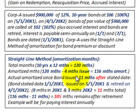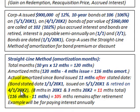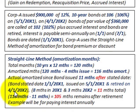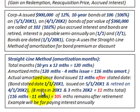The actual months amortized since the bond was issued are 11 months. The bond stated date is 1-1-20X1, issued on 5-1-20X1, and retired on 4-1-20X2. For 20X1, that's eight months from May 1st to year-end. For 20X2, that's three months from January 1st to April 1st. So total months outstanding equals eight plus three, giving us 11 months amortized.